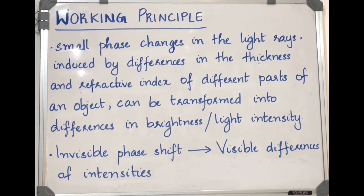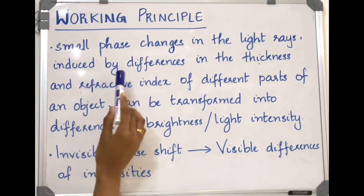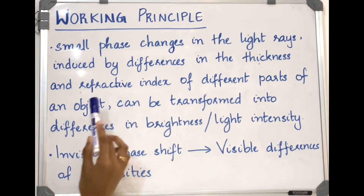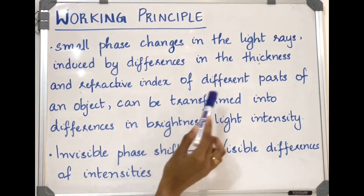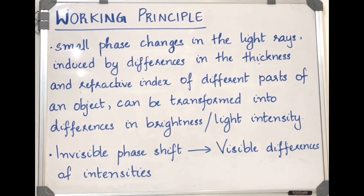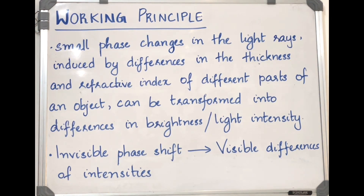Working principle of phase contrast microscope: the phase contrast microscope is based on the principle that small phase changes in the light rays, induced by differences in the thickness and refractive index of different parts of an object, can be transformed into differences in brightness or light intensity. In other words, the phase contrast microscope will translate invisible phase shifts into visible differences of intensity.